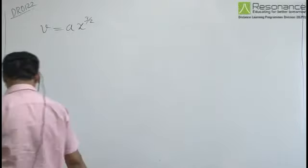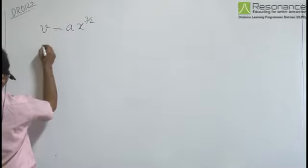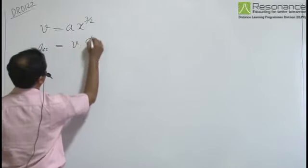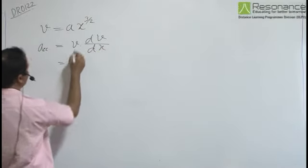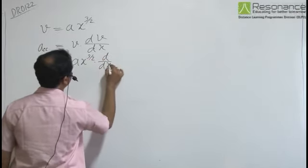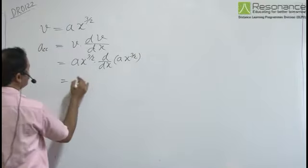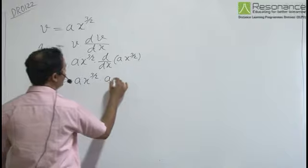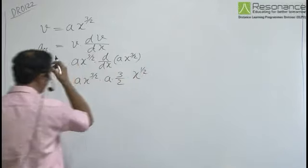This is the velocity as a function of X. If we write acceleration, that equals V dV/dX, which equals AX^(3/2) times d/dX of AX^(3/2). This becomes AX^(3/2) times A times 3/2 X^(1/2).